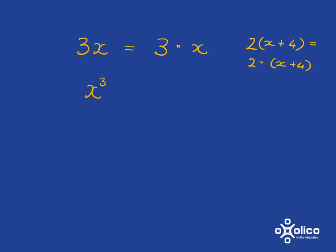A very different story to 3x is x³. x cubed, that exponent means that you've got x times x times x. x multiplied by itself 3 times.